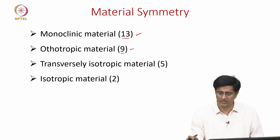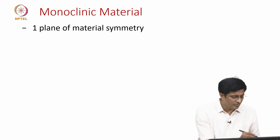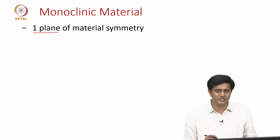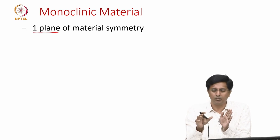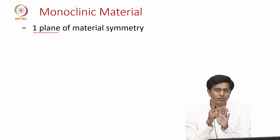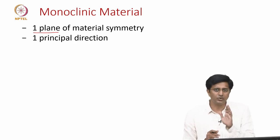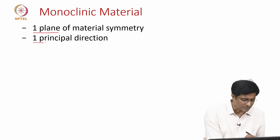Let us start with the monoclinic materials. These are materials where we have one plane of material symmetry. What it means is there is a plane where the points on one side of the material are simply the mirror image of the points on the other side of the material. Since we have this mirror image across a plane, the normal to this plane is what we consider as the principle direction. Since we only have one plane on which there is symmetry, we have only one principle direction.